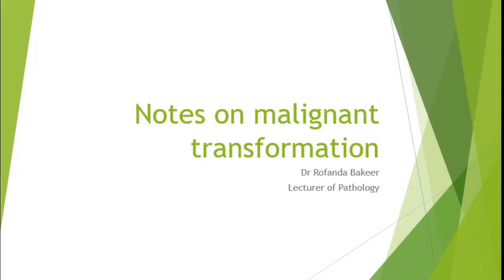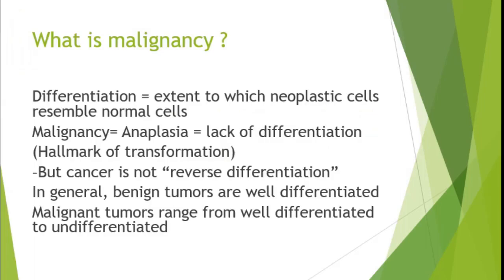Notes on malignant transformation. First, we're going to talk about what is malignancy. Differentiation is the extent to which neoplastic cells resemble the normal ones. Malignancy or anaplasia is the total loss or lack of differentiation.